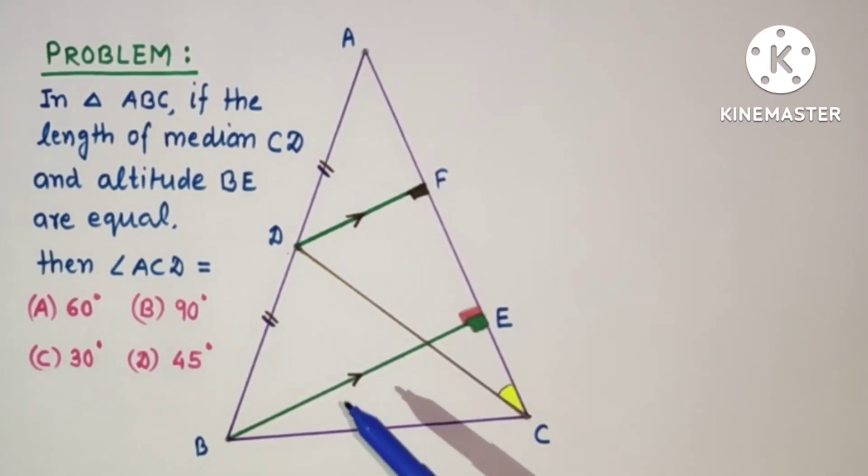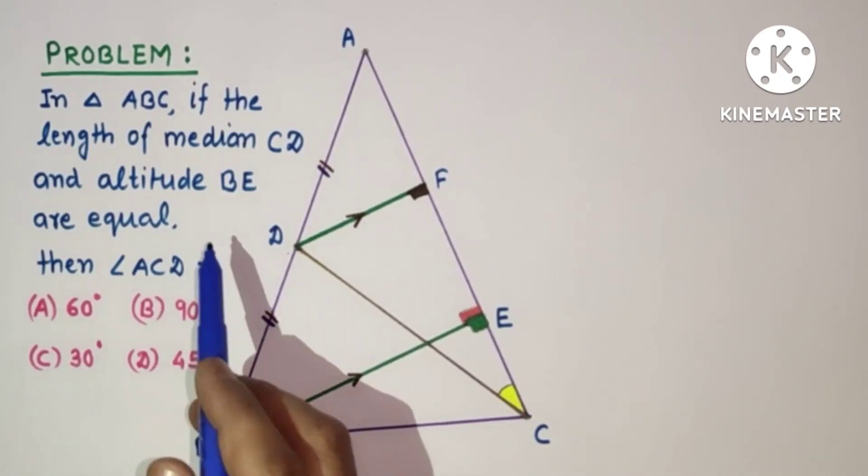So by midpoint theorem, length of DF is equal to half of length of BE. But BE is equal to CD given. So it means length of DF is equal to half length of BE, that is equal to half length of CD.